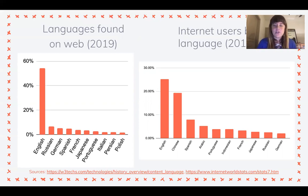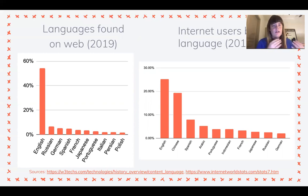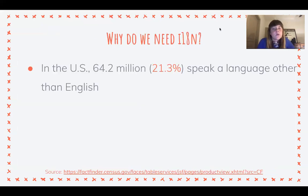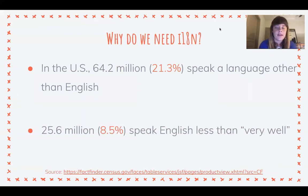If you look at internet users by language, English is still on top, but 50% of the web is in English while only 25% of internet users actually speak English. Chinese is the second largest group of internet users and yet isn't even in the top 10 of languages found on the web. From a financial standpoint it makes a lot of sense to translate into these languages, because non-English users might not find similar applications in their own language. In the US, 21% of people speak a language other than English and 8.5% speak English less than very well — so you're missing out on a huge user base.